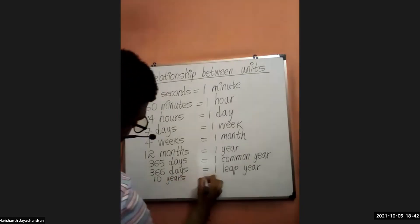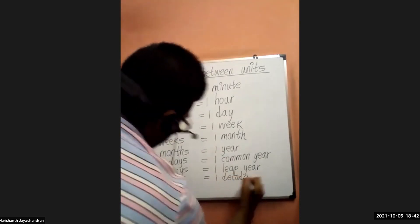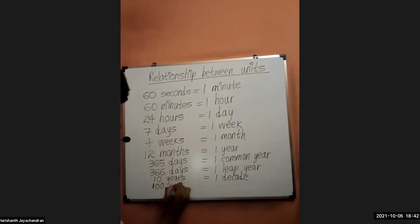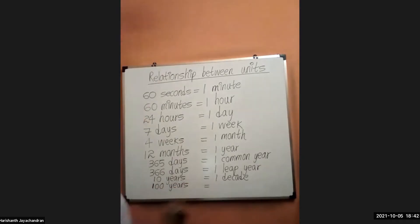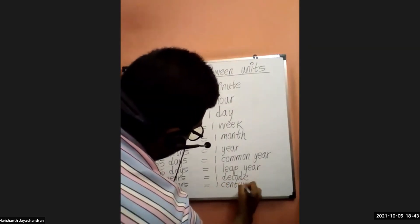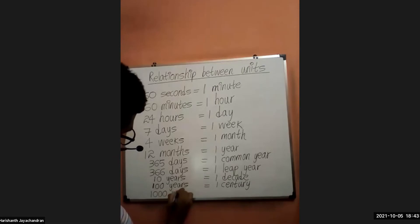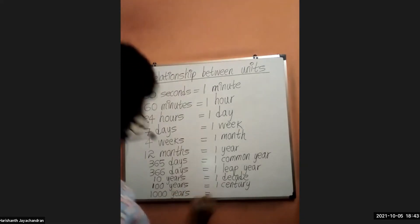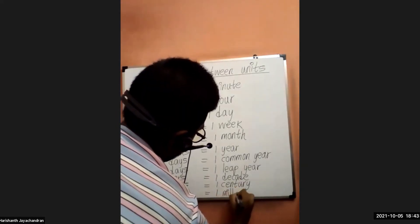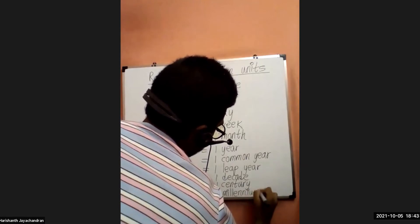10 years is equal to one decade, 100 years is equal to one century, and 1,000 years is equal to one millennium. Please quickly copy this down.